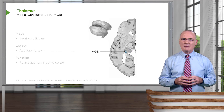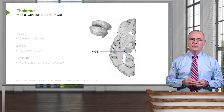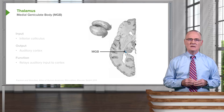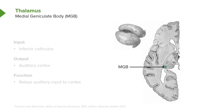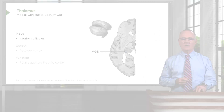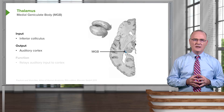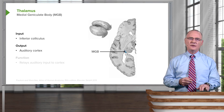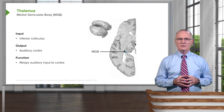Here is another thalamic nucleus to remember: the medial geniculate body, or MGB. It is labeled here with a slender portion visible in this region. The input into the medial geniculate body is from the inferior colliculus, and its output goes to the auditory cortex of the temporal lobe. Thus, it functions as a relay for auditory input to the cortex.